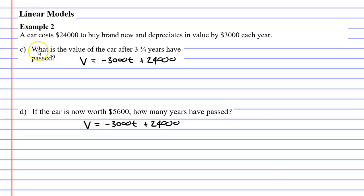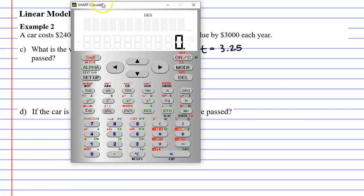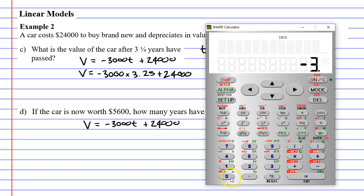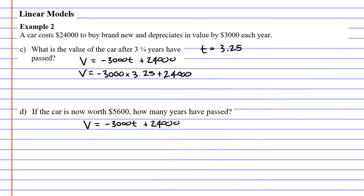We're going to use this equation to solve questions c and d. Looking at question c first, it says, what is the value of the car after three and a quarter years have passed? That means our time is 3.25. And all we need to do is substitute it into our equation. So we go v equals negative 3,000 times 3.25, plus 24,000. And we get 14,250. The value of the car after three and a quarter years will be $14,250.